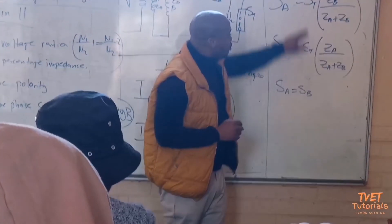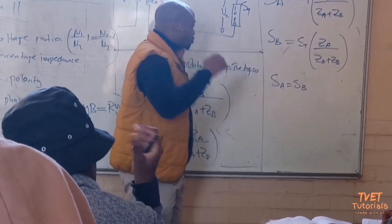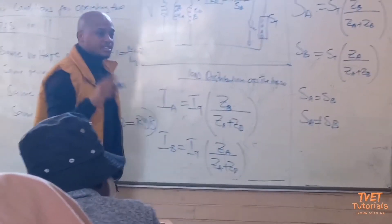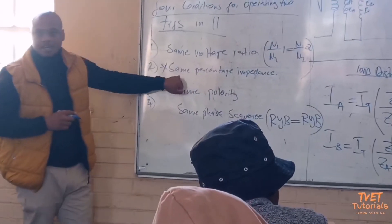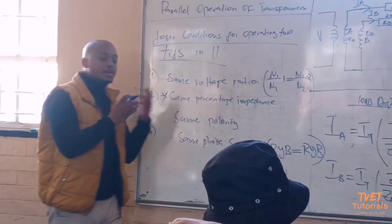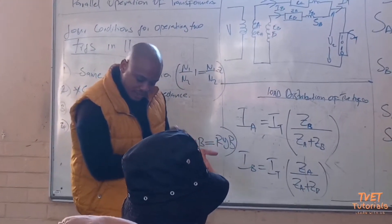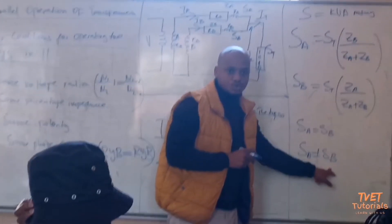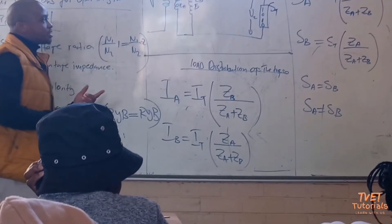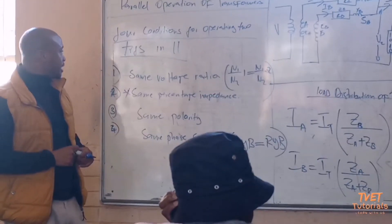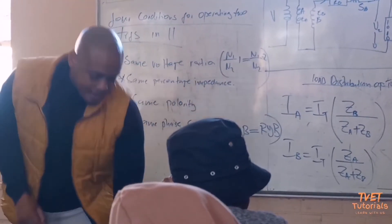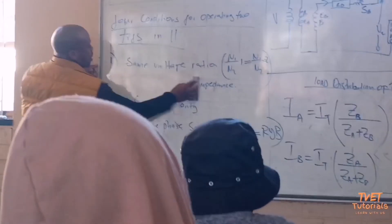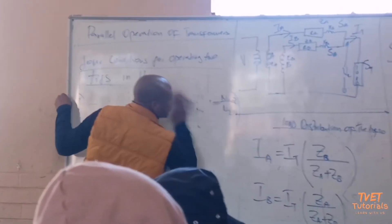But should it happen that SA is not equal to SB, that means the condition is no longer met. You then need to find a ratio to equate the two. So you choose a base KVA value, which we will call S_base.